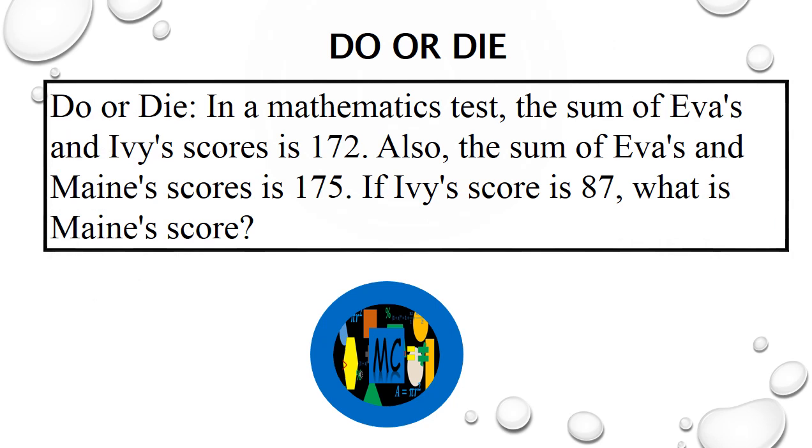Do or Die: In a mathematics test, the sum of Eva's and Ivy's scores is 172. Also, the sum of Eva's and Maine's scores is 175. If Ivy's score is 87, what is Maine's score?